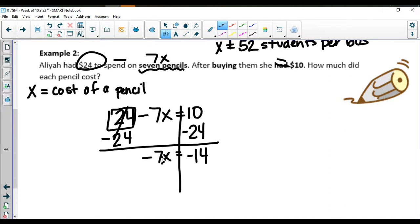Negative seven times X. So I'm going to divide by negative seven. Matchy matchy. Matchy matchy. So X is equal to two. Remembering X is the cost of a pencil, we're going to say for our final answer $2 per pencil.